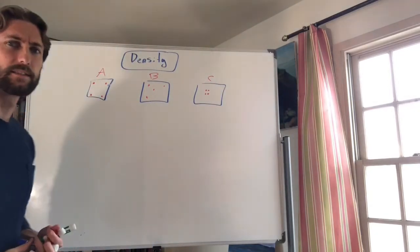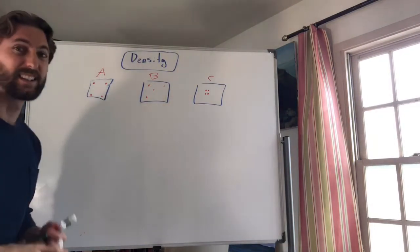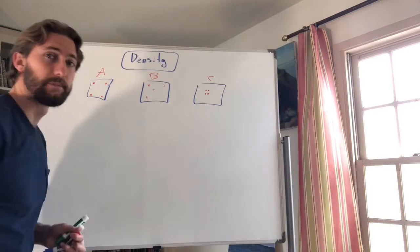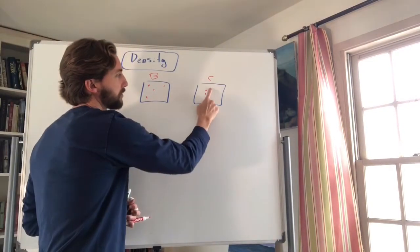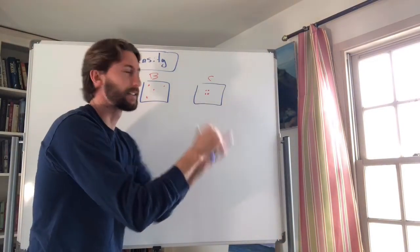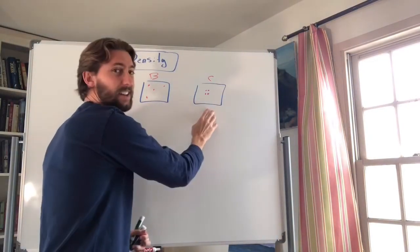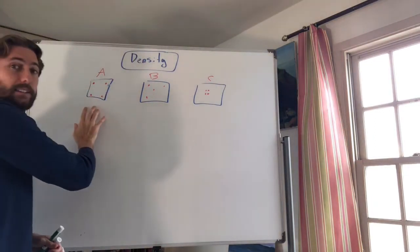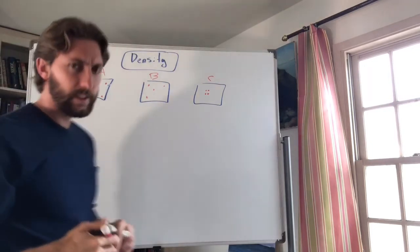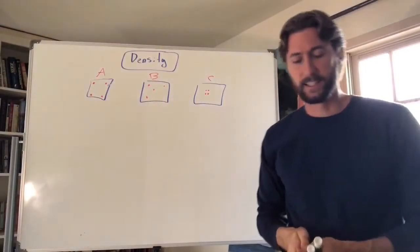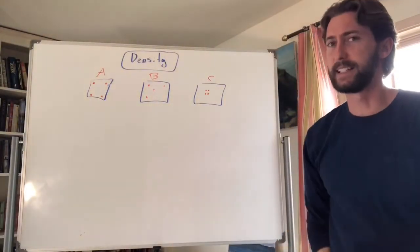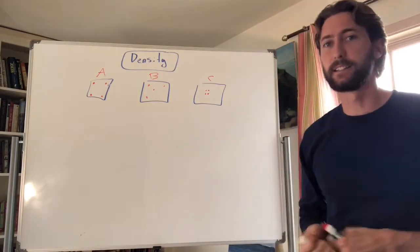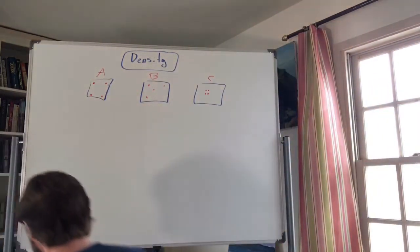Out of the three boxes, Box C has the dots that are most dense — they're really compact and close together. Box A is the least dense, the most spread out. Now that we understand density, let's talk about the two types of limiting factors: density dependent, which depends on the density, and density independent, which doesn't.